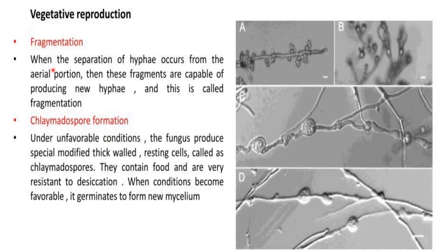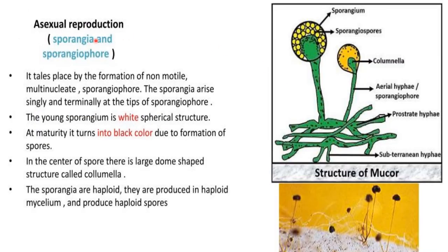Fragmentation and asexual reproduction take place under favorable conditions. Chlamydospore formation, however, takes place under unfavorable conditions. The fungus produces special, modified thick-walled cells, also called resting cells — these are the chlamydospores. They contain food reserves and are very resistant to desiccation. When conditions become favorable, they germinate to form a new mycelium.